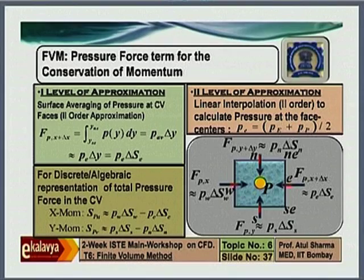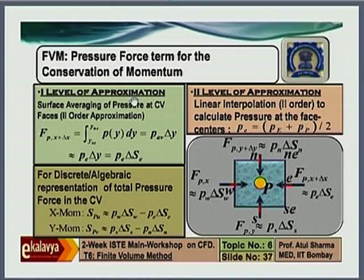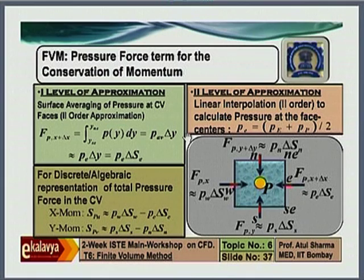I have a question in topic number 6, slide number 37. Here in the first level and second level approximation, it is mentioned that they are second order approximations. How can we decide — again based on Taylor series expansion? Yes. So the surface averaging, volume averaging, or linear interpolations which we do — I had always mentioned that they are second order accurate, but if you want to show the order of accuracy in numerical analysis, you can show it through a Taylor series expansion. Maybe I will put this analysis part in Moodle where it shows that this is indeed second order accurate.